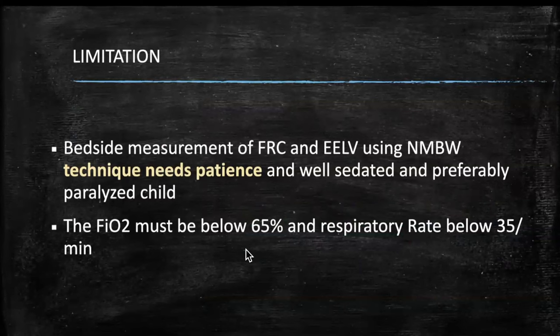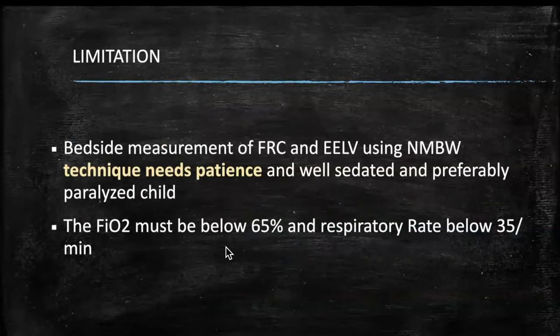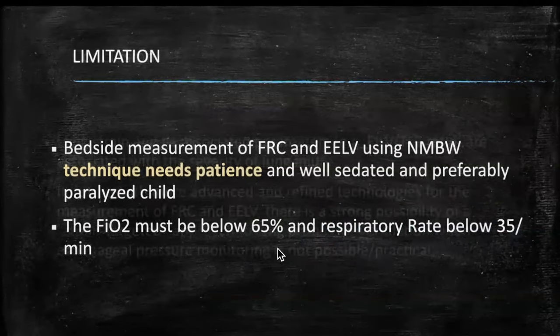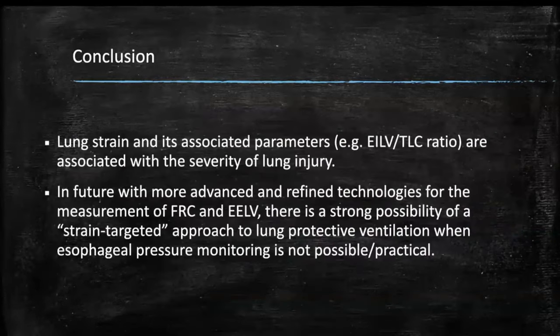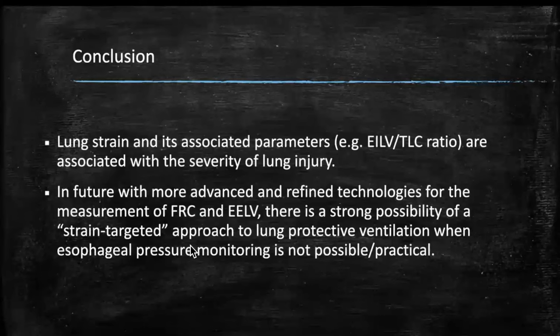All results cannot be discussed here as the study is still pending publication. Limitations include: bedside measurement of FRC using nitrogen multiple-breath washout requires patience and has technical limitations; FiO2 must be below 65%; respiratory rate must be less than 35 per minute. Our findings so far suggest lung strain and associated parameters — such as end-inspiratory lung volume to total lung capacity ratio — are associated with severity of lung injury. Future technologies may enable strain-targeted lung-protective ventilation.